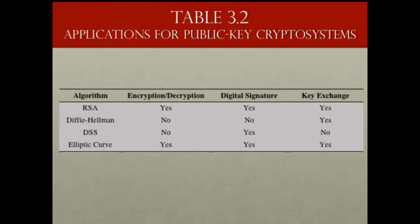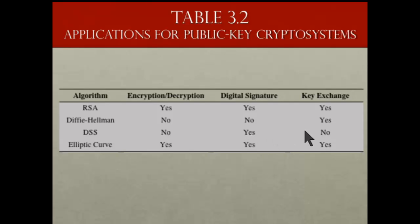Some algorithms support all three applications, while others support only one or two. For example, RSA can be used for encryption/decryption, digital signatures, and key exchange. Diffie-Hellman supports only key exchange — no encryption/decryption or digital signatures. DSS supports only digital signatures.